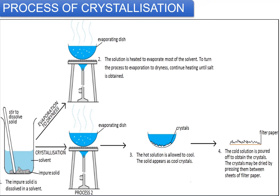A typical cycle of crystallization: you have an impure solid which is dissolved in a solvent. You can stir it completely to dissolve the solid into the solvent, and then evaporate it to dryness using some external source of heating. You can pour that liquid in an evaporating dish and allow it to dry until you see the formation of crystals. The solution is heated to evaporate most of the solvent, and you can continue heating until the salt is obtained. The hot solution is then allowed to cool and solids appear as crystals on top of the evaporation dish.